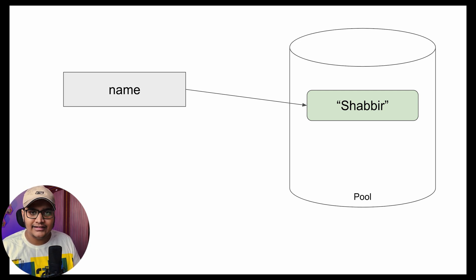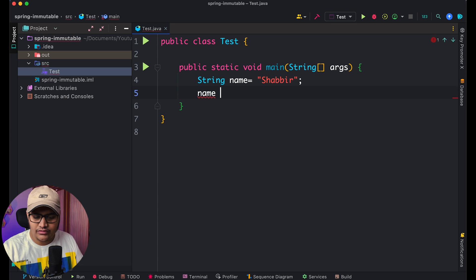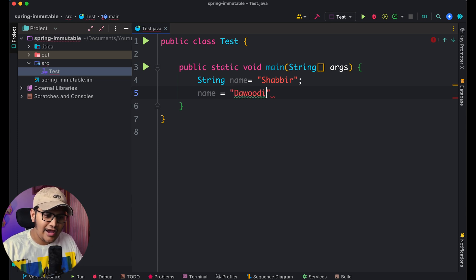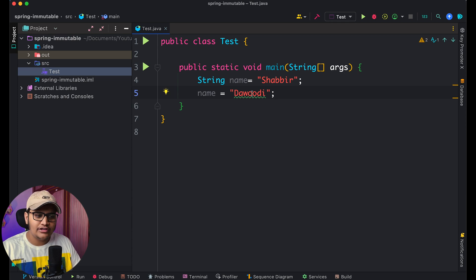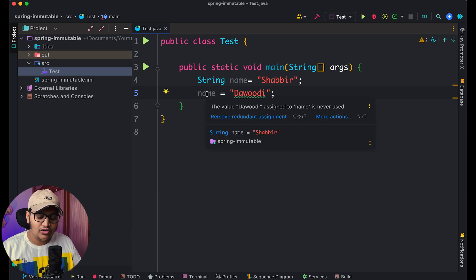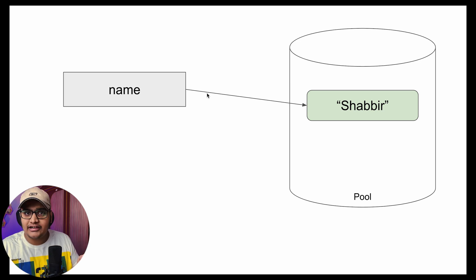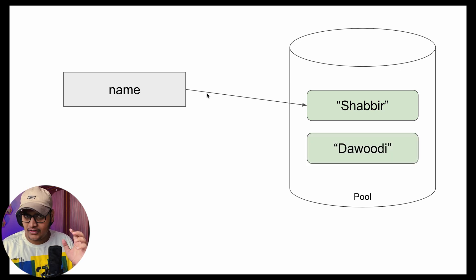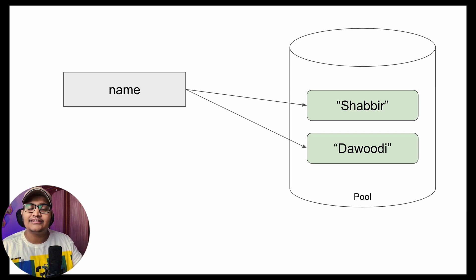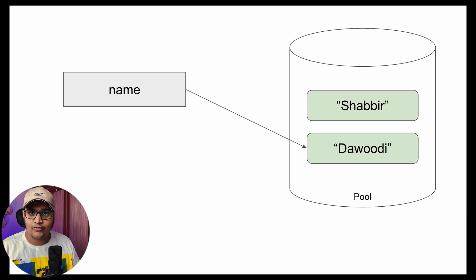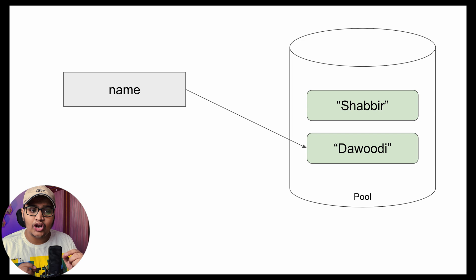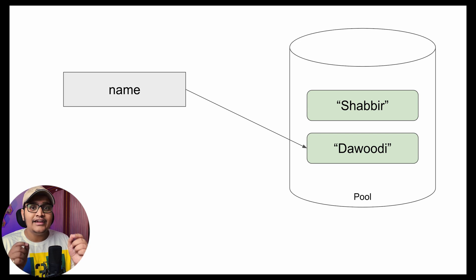Now, what happens when I do `name = "Dowdy"`? I'm just changing the value of the variable `name`. What happens in the JVM is a new object is created with the value "Dowdy", and the reference to that new object is assigned to the variable `name`. The reference which was already there for "Shabir" has been removed, and a new object is created.